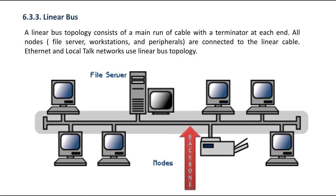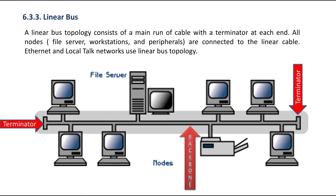The network is working on this wire, which has two ends with terminators. The network has many computers, nodes, servers, and other devices. They all have this linear cable connected to this wire. Bus topology is where Ethernet and LocalTalk networks are used.